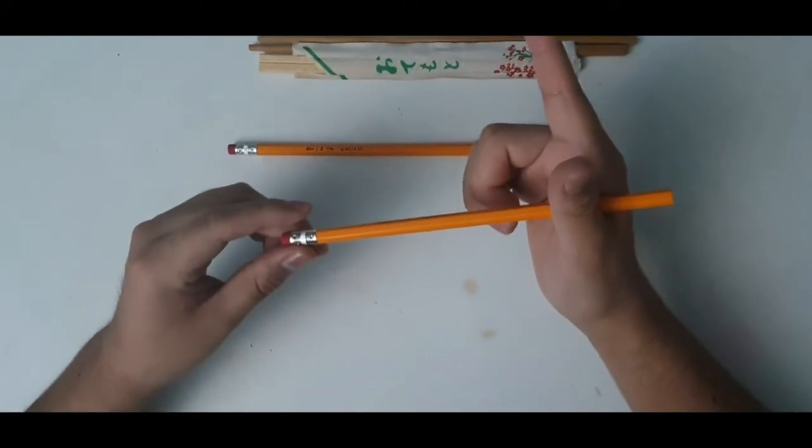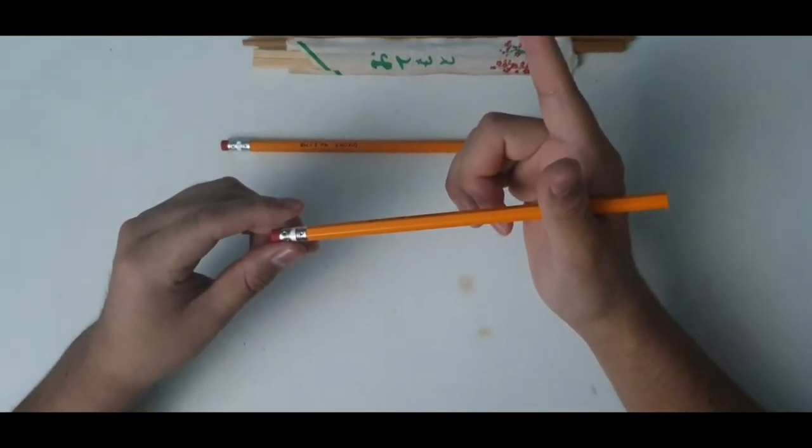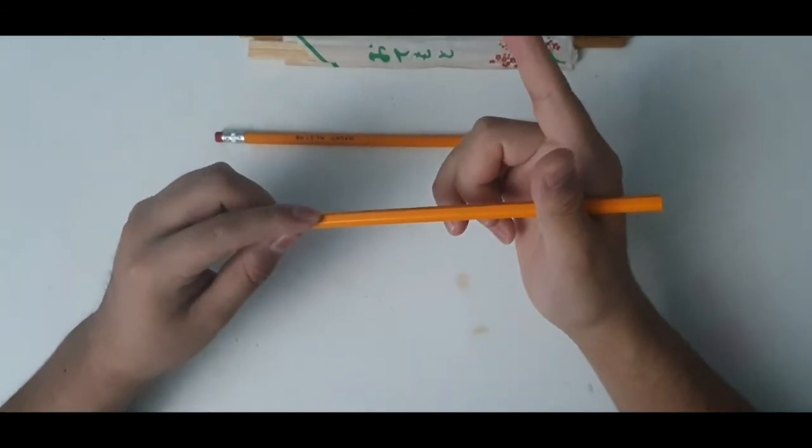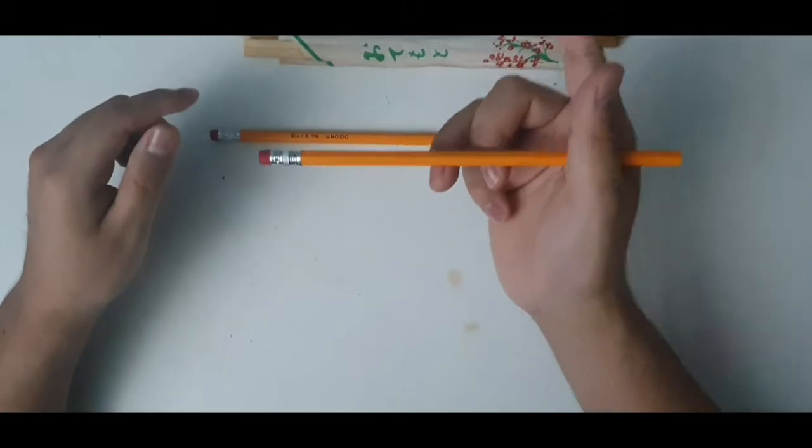And the other step is you also want to place the pencil on top of your ring finger, and it should look something like this.